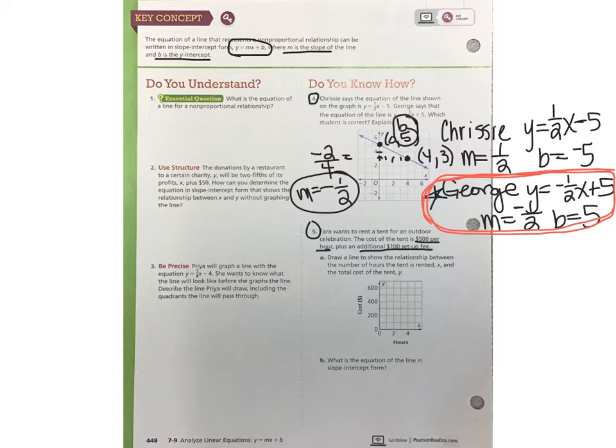So remember, the additional setup fee tells us how much we have to pay before we even have any hours for the tent to rent. So this is my initial fee and it is only paid once. The hourly rate is paid depending on the number of hours that the tent is used. So the line is going to be starting at that initial fee. So we start the line at $100 for zero hours because that's how much we've had to pay to set up the tent.